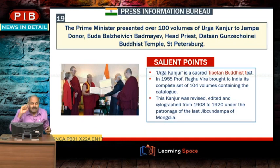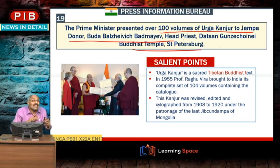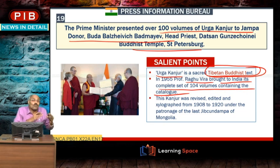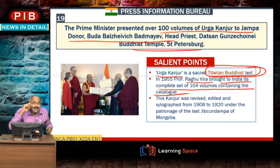The Prime Minister presented over 100 volumes of Urga Kanjur to Jampa Donor, head priest of a Buddhist temple in St. Petersburg. Urga Kanjur is the sacred Tibetan Buddhist text. In 1955, Professor Raghu Vira brought it to India. It is a complete set of 104 volumes containing the catalogue.